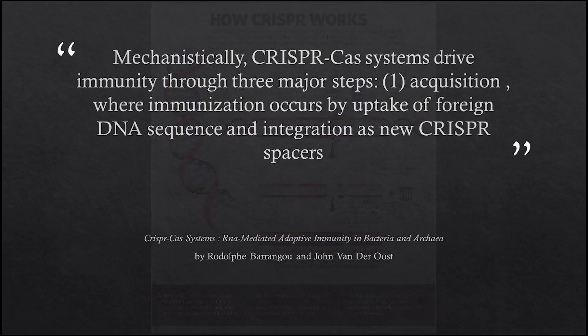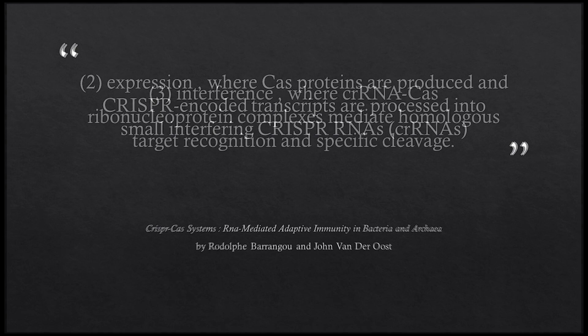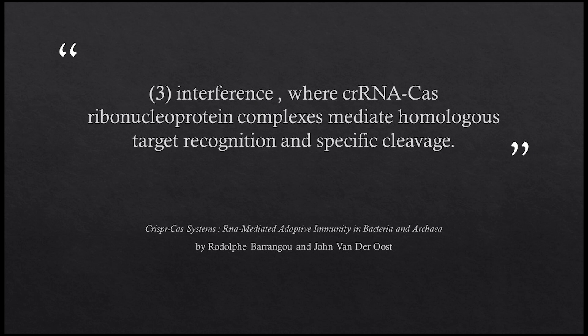According to their 2012 book, CRISPR-CAS Systems: RNA-Mediated Adaptive Immunity in Bacteria and Archaea, Rodolphe Barrangou and John Van der Oost state that CRISPR-CAS systems drive immunity through three major steps. Number one, acquisition, where immunization occurs by uptake of foreign DNA sequence and integration as new CRISPR spacers. Number two, expression, where CAS proteins are produced and CRISPR-encoded transcripts are processed into small interfering CRISPR-RNAs or crRNAs. Number three, interference, where crRNA-CAS ribonucleic protein complexes mediate homologous target recognition and specific cleavage.